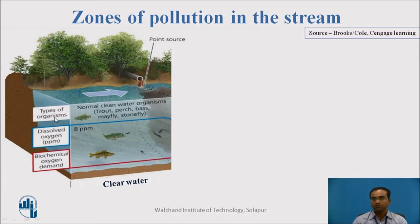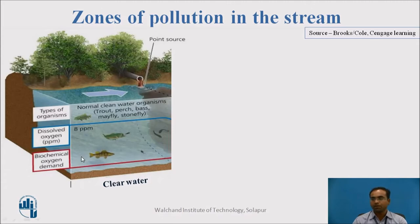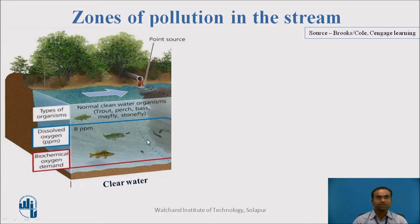Two terms are highly important to understand the various zones: first is dissolved oxygen (DO) and another is BOD, that is Biochemical Oxygen Demand. In the clear water zone, DO is highly present — above 6 ppm, mostly taken as 8 ppm — and BOD is very low, because no wastewater is present, meaning no food, no bacteria, and therefore very little BOD. The high DO is also used by fishery, and food is present in abundance.